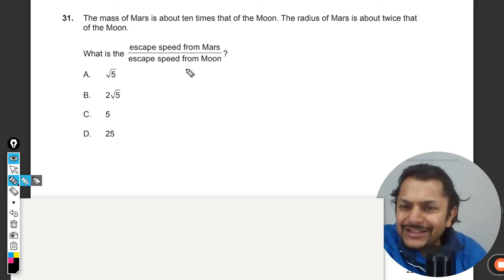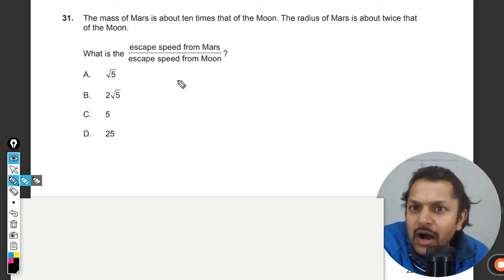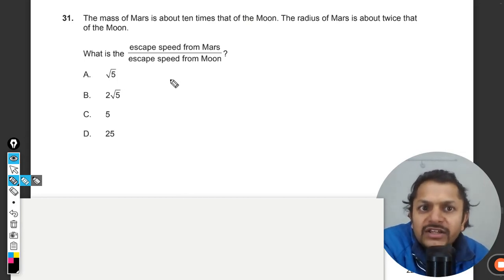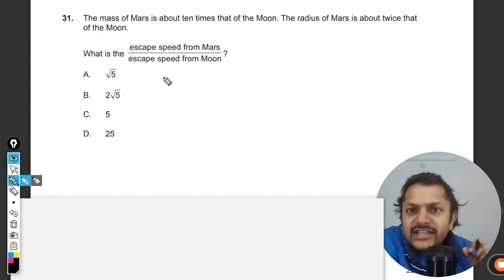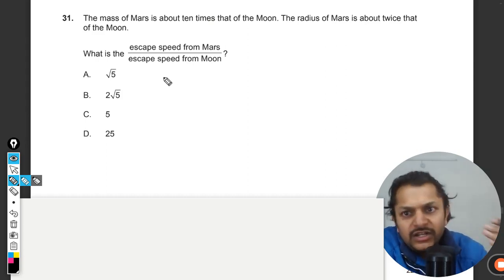Let's see what is in this question. The mass of Mars is about 10 times that of the Moon. The radius of Mars is about twice that of the Moon. What is the escape speed from Mars divided by escape speed from Moon?